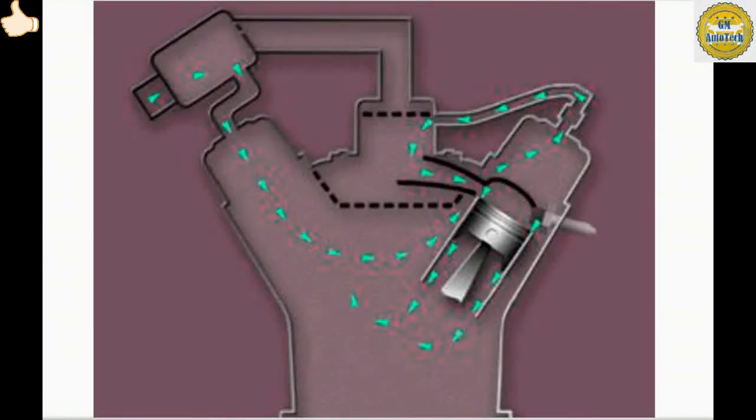A malfunctioning positive crankcase ventilation or PCV system can cause high crankcase pressure, which may result in gasket or seal damage.